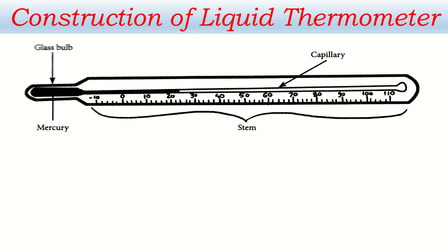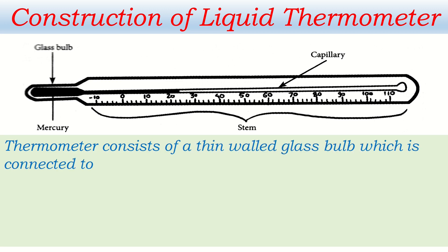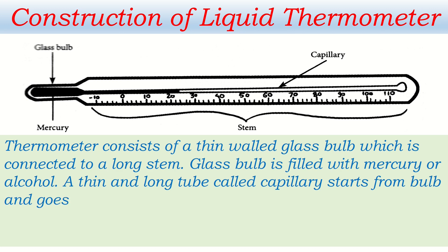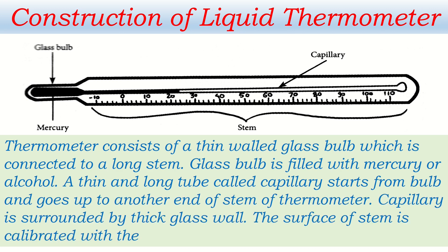If you have to write about the construction of a liquid thermometer, you can write this way: the thermometer consists of a thin-wall glass bulb connected to a long stem. The glass bulb is filled with mercury or alcohol. A thin and long tube called a capillary starts from the bulb and goes up to the other end of the stem. The capillary is surrounded by thick glass wall. The surface of the stem is calibrated with values of temperature in degrees Celsius.